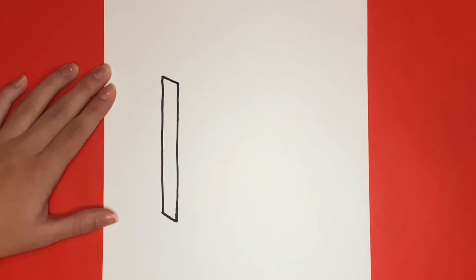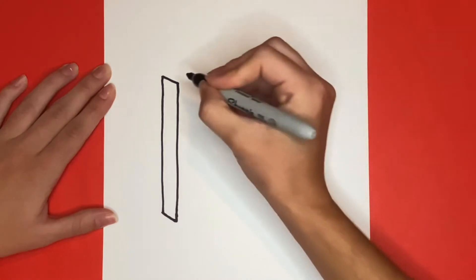Now we are going to draw the front side of our binder by drawing a square-like shape that is a little bit slanted.